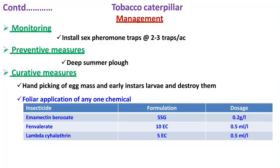For management of Spodoptera litura in castor, use a sex pheromone trap with Spodolure for monitoring. Deep summer ploughing helps expose the pupa to sunlight so it is picked up by birds. In an early stage, collect the different egg masses laid in clusters on the surface of leaves and destroy them, and also collect different larval instars. For chemical control, spray the crop with recommended insecticides like emamectin benzoate, phenthoate, and lambda-cyhalothrin. These are the different major and minor pests of the different oilseed crops.